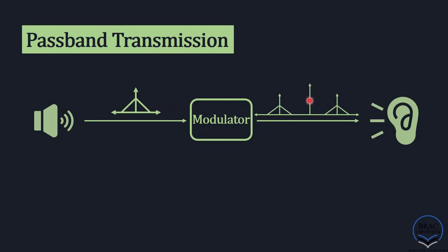Here you can see the difference. In the case of the original signal, there were only low-frequency components, but in the output signal from the modulator, the signal is shifted to higher frequency. Then this modified signal reaches the listener. The modulator changes the spectral shape of the signal and it is useful for transmitting the signal over a long range.